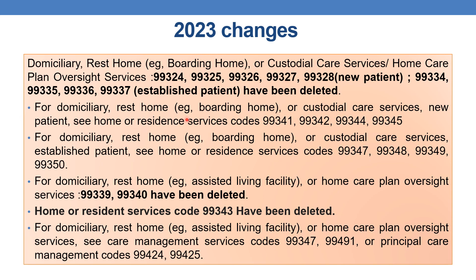For domiciliary, restroom or custodial care services — new patient — you need to refer to the home or resident services, which have been revised. These revised codes are 99341, 99342, 99344, and 99345. Additionally, CPT 99343 from home or resident services has been deleted.